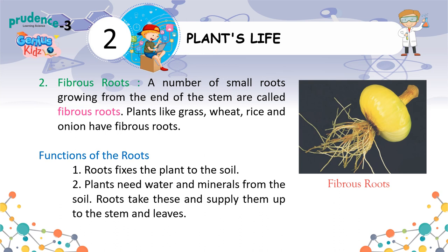Fibrous roots. A number of small roots growing from the end of the stem are called fibrous roots. Plants like grass, wheat, rice and onion have fibrous roots.